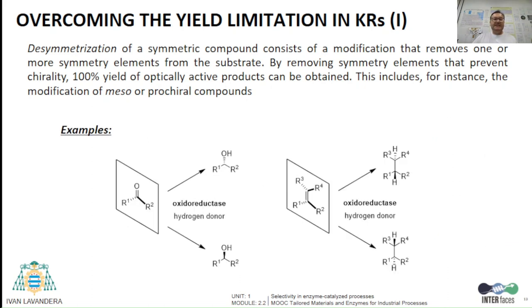Examples of biocatalytic desymmetrizations are the bioreductions of prochiral ketones or alkenes by the action of oxidoreductases.